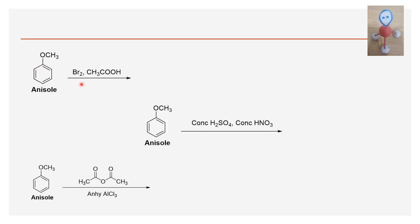When anisole reacts with bromine in acetic acid, it undergoes a bromination reaction following an electrophilic aromatic substitution mechanism. OCH3 is an electron-donating group, so we get ortho-bromoanisole and para-bromoanisole.